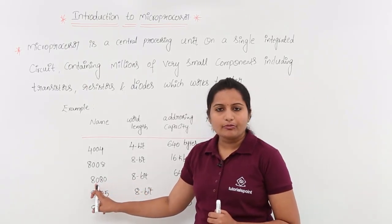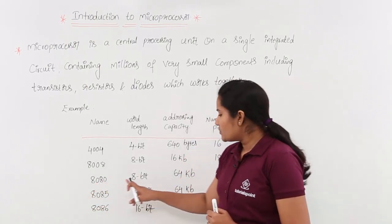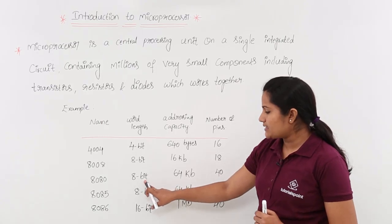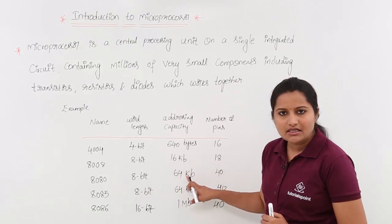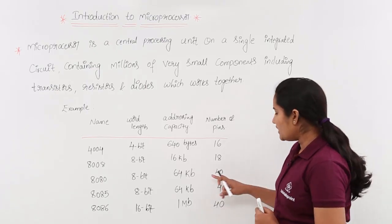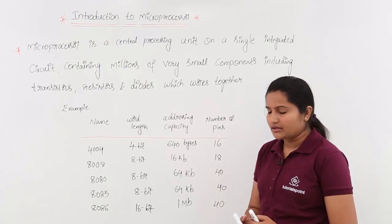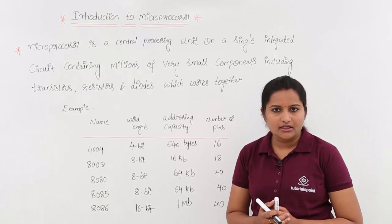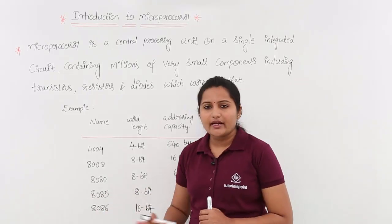Like that, we are having next microprocessor 8080. Here also the word length is 8-bit, but addressing capacity is increased from 16 KB to 64 KB. Now the number of pins also increased. In this microprocessor, the number of pins are 40 here.